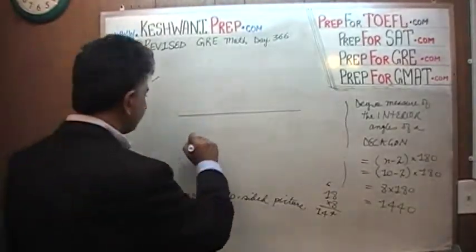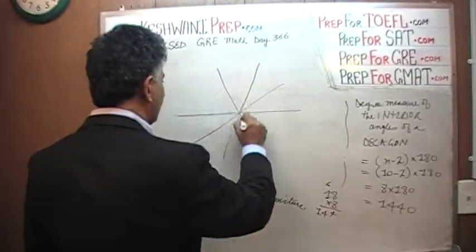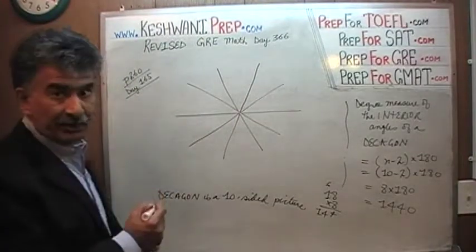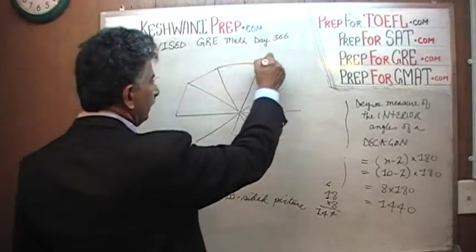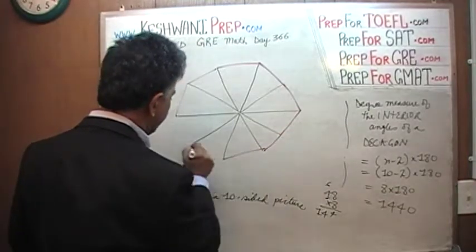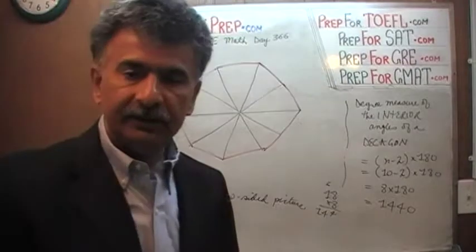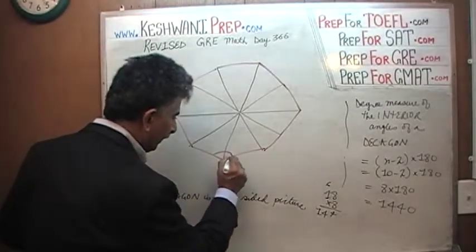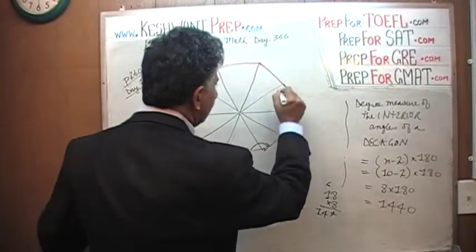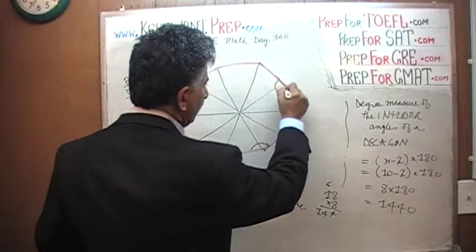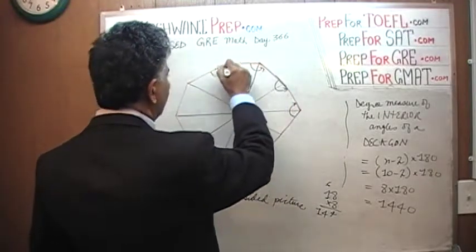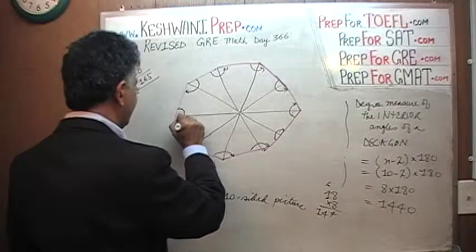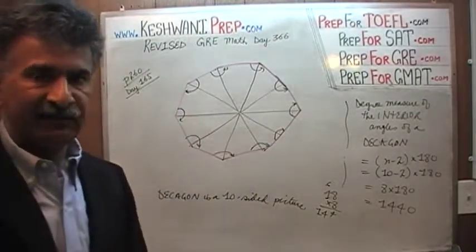Here is our decagon — one, two, three, four, five, six, seven, eight, nine, and ten. It's a ten-sided figure. As you can clearly see, this is not a regular decagon — it's not a symmetric one. The question is: what is the degree measure of the interior angles? The interior angles are the angles at each of the ten vertices of this figure.